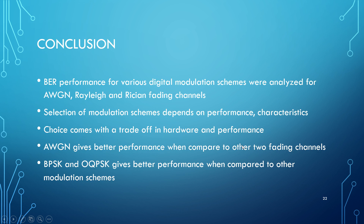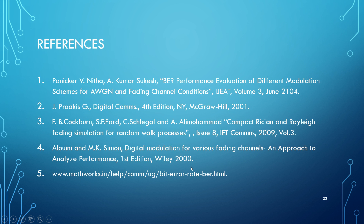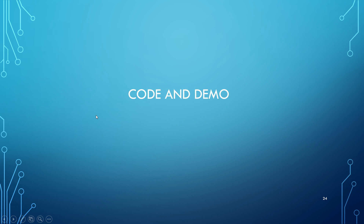Finally, we can conclude that the selection of the modulation scheme depends on performance characteristics. The choice comes with a trade-off in hardware and performance. For all modulation schemes, AWGN gives better performance when compared to the other two fading channels. And for all fading channels, BPSK and QPSK give better performance when compared to the other modulation schemes. These are the references used for the completion of the project. Now let us look at the code and the demo.